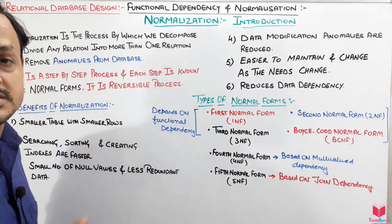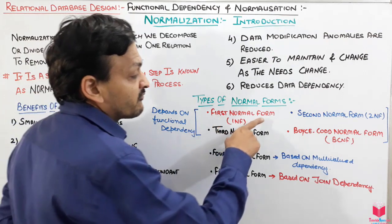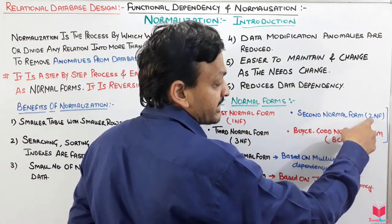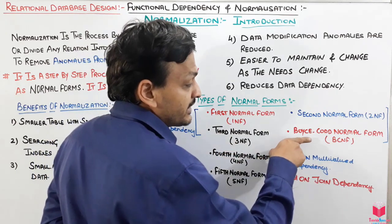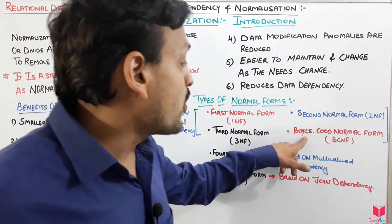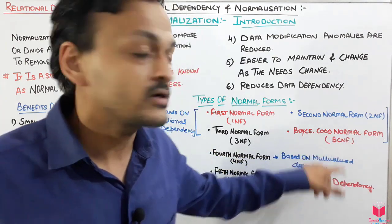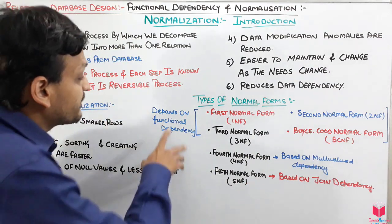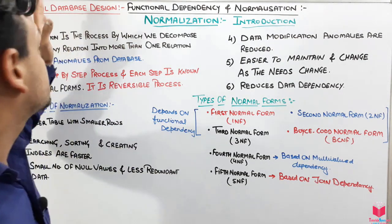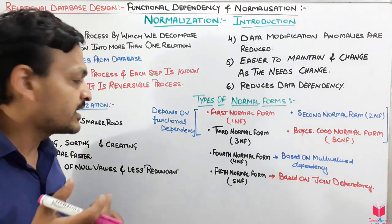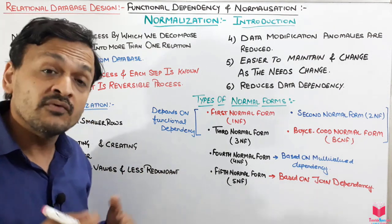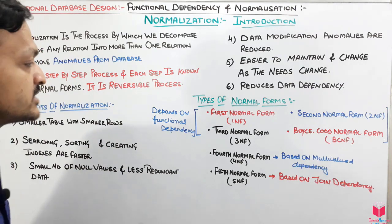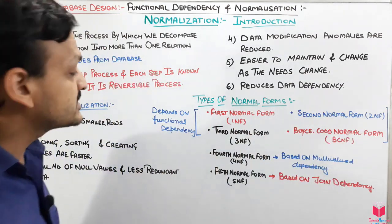There are several types of normal forms representing the step-by-step processes of normalization. The first is First Normal Form (1NF), then Second Normal Form (2NF), Third Normal Form (3NF), and Boyce-Codd Normal Form (BCNF). These first four normal forms are all based on functional dependency, where we determine how columns depend on each other.